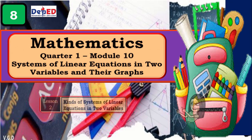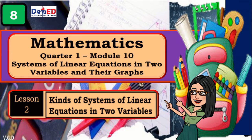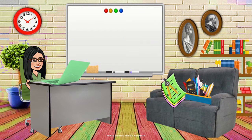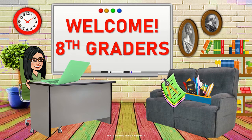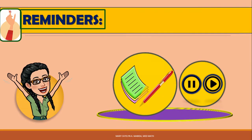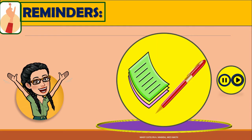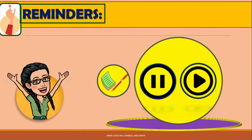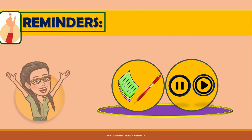This video is about kinds of systems of linear equations in two variables for 8th graders. Welcome to your virtual classroom. Just a few reminders for your convenience: get a sheet of paper and a pen to answer the exercises. To make sure you comprehend and follow through the concepts in the video, pause and replay the video at any time. Now, you are ready!